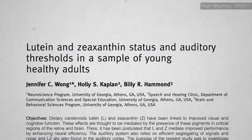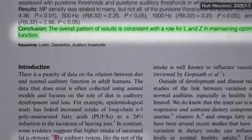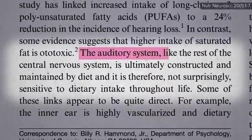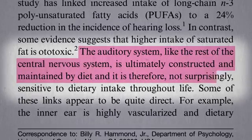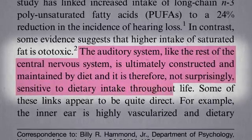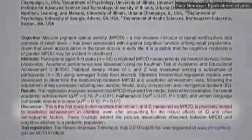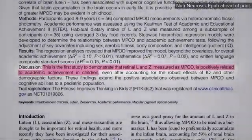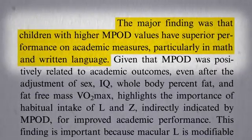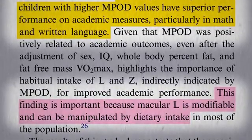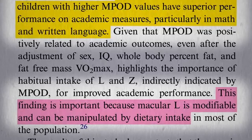You can take 20-year-olds and show superior auditory function in those with more macular pigment in their eyes. The auditory system, like the rest of our central nervous system, is ultimately constructed and maintained by diet, and is therefore sensitive to dietary intake throughout life, all the way back to childhood. Higher macular pigment is associated with higher academic achievement among school children — you can look into a kid's eyes and get some sense of how well they may do in subjects like math and writing. Crucially, macular lutein is modifiable and can be manipulated by dietary intake.